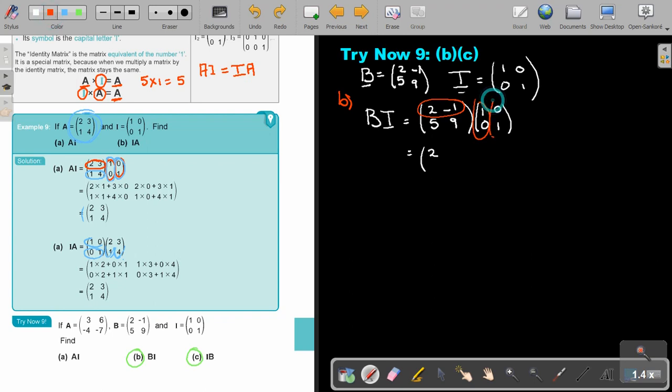Now, by the second column. So that's 0 and 5 times 1 is 5. And then a row by a column. So negative 1 times 1, that's negative 1. And then by this column. So it's 0 because 5 times 0 and 9 times 1 is 9. Can you see? It's exactly the same. It's like multiplying by 1.